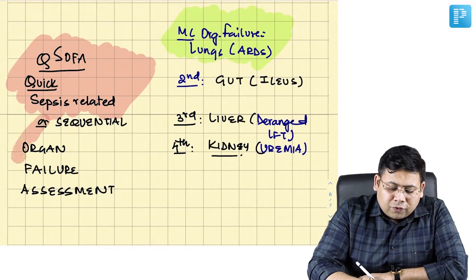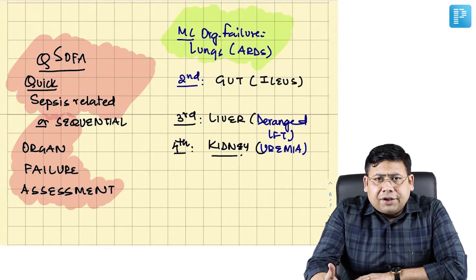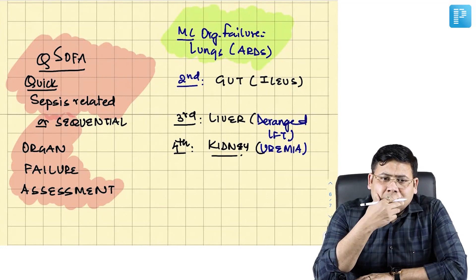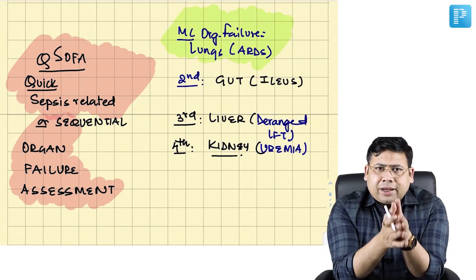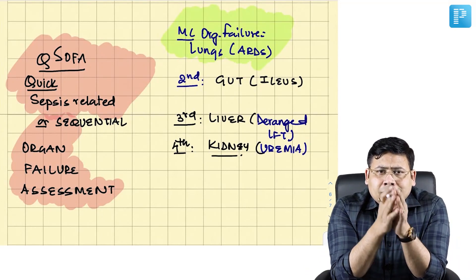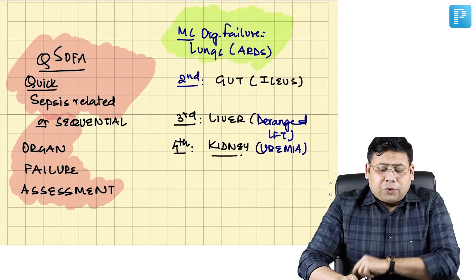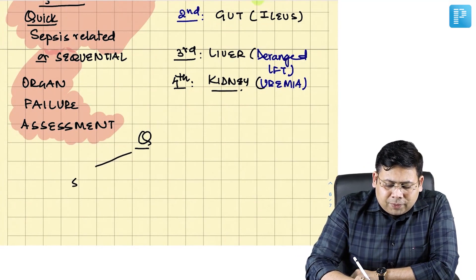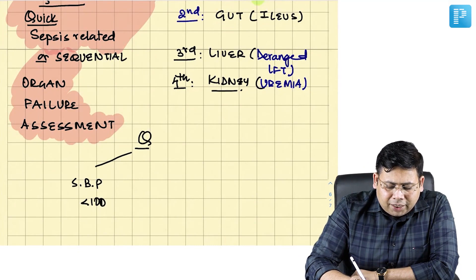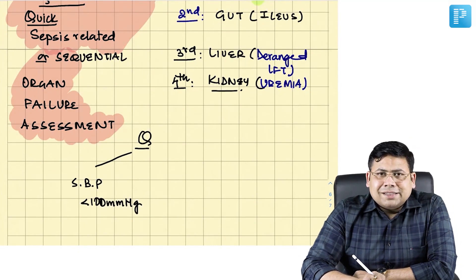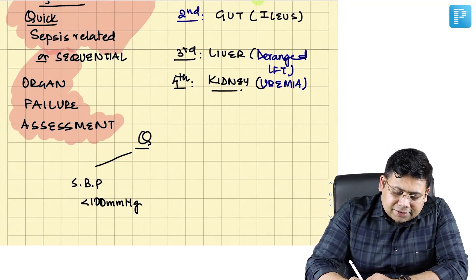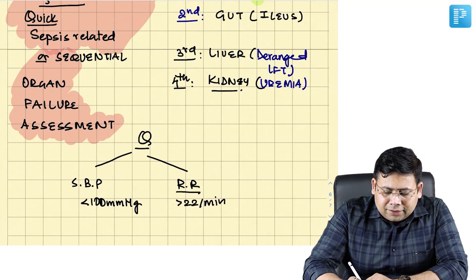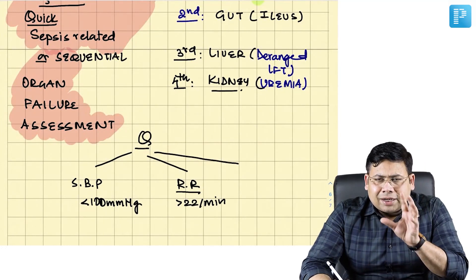This can be seen in sepsis related conditions or chronic inflammatory conditions like pancreatitis. It is a questionnaire basically to check how the patient is going to perform in the setting of organ failure. There are three questions that you are going to ask. Systolic BP less than 100 mmHg. Is the respiratory rate more than 22 per minute?